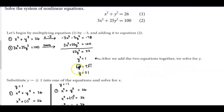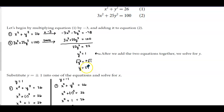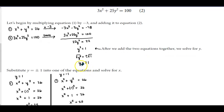To solve for y we take the square root of both sides, and remember that taking the square root gives a plus-or-minus solution. Plus or minus the square root of 1 is plus or minus 1, so y = +1 and y = −1.